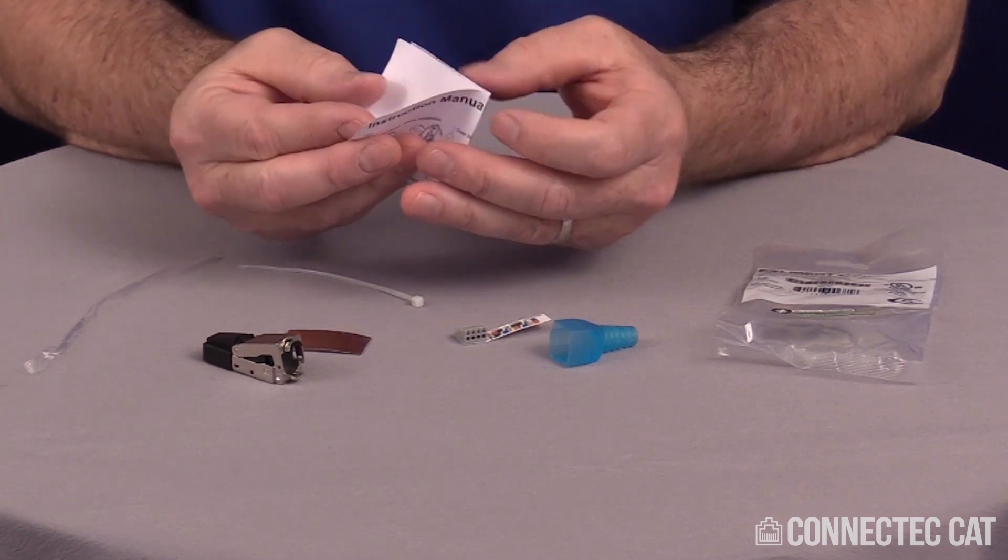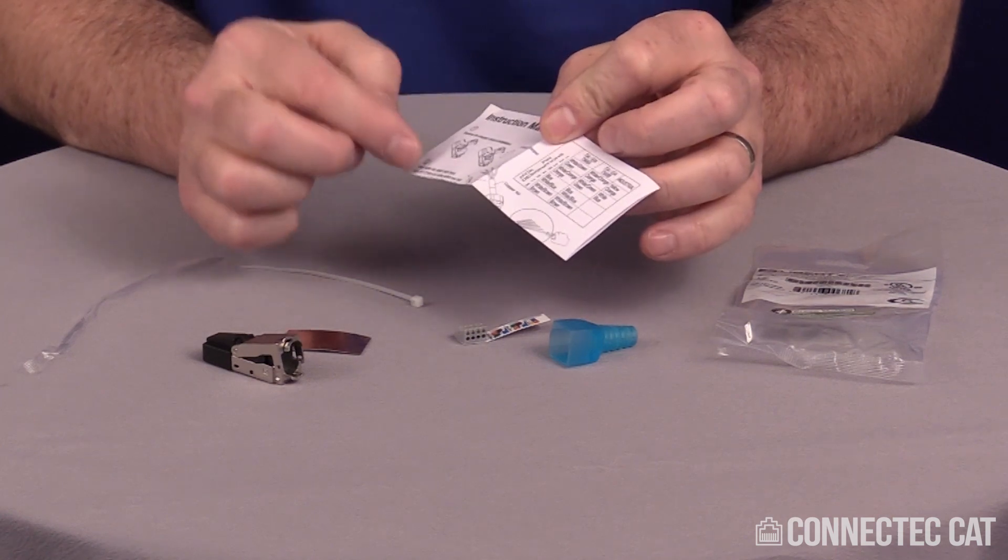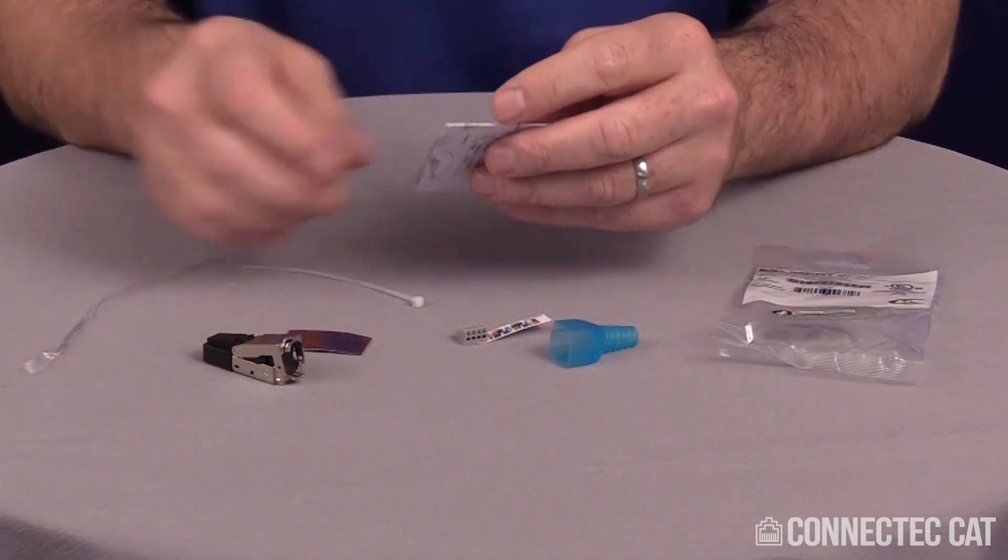The instructions are pretty self-explanatory but I will demonstrate the termination. One difference I do is a 2 inch strip versus a 1.2 inch strip. I just like a little bit more to work with.